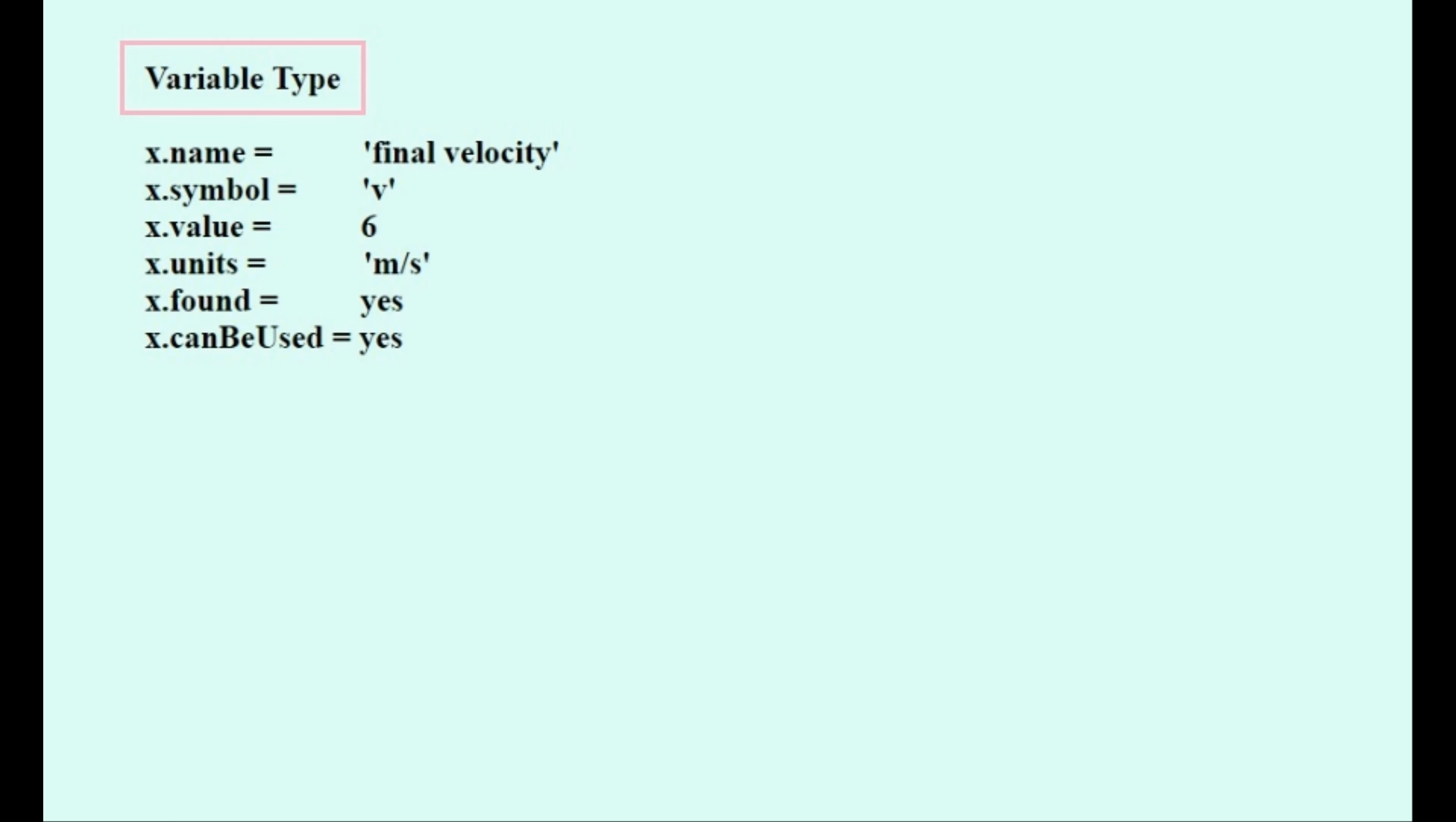The first thing to do is create a structured type called a variable type. This stores lots of information about a variable like its name, symbol, value, units, whether or not it has been found, and whether it can be used to find the values of other variables. There are different ways to create structured types, like actually making them in C++ or making separate arrays to mimic a structured type.